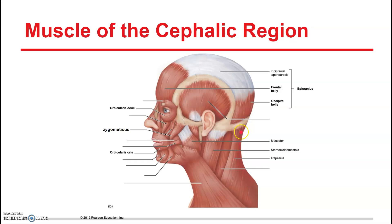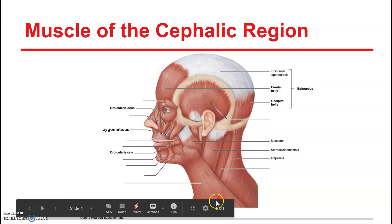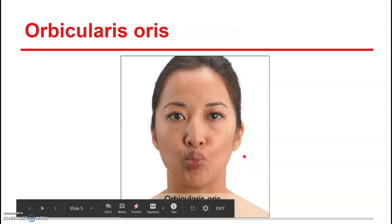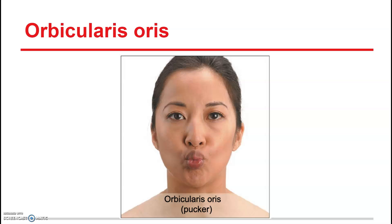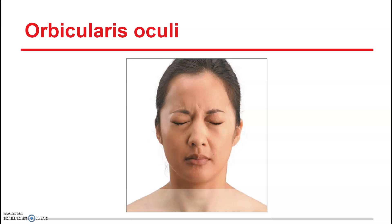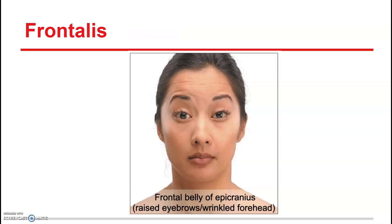The other muscle on this slide is the trapezius, a really large muscle. There's an attachment at the occiput, then it comes out and attaches to the scapula, and also attaches to the spinous processes of the thoracic and cervical vertebrae. Here is the orbicularis oris being used, the orbicularis oculi being used, and the frontalis being contracted — it lifts your eyebrows and wrinkles your forehead.